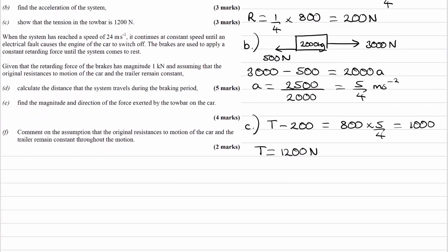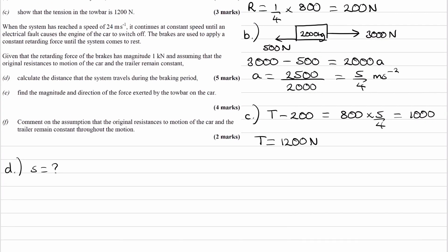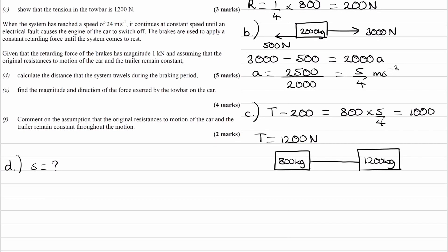For part D, we're trying to work out the distance the system travels during the braking period. We're told the system reaches a speed of 24 meters per second, continues at constant speed, then there's an electrical fault — the engine switches off, brakes are used, and the system comes to rest. The braking force is 1,000 newtons and the resistances to motion don't change. Let's draw a new force diagram — the car and trailer experience the same resistive forces as before: 200 newtons and 300 newtons, plus a braking force of 1,000 newtons on the car.